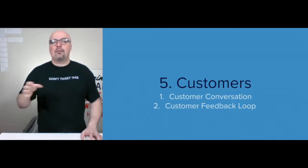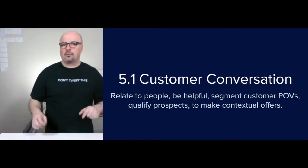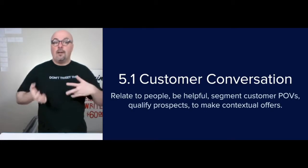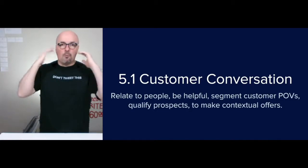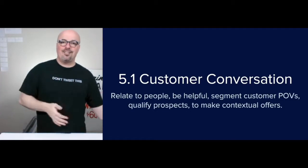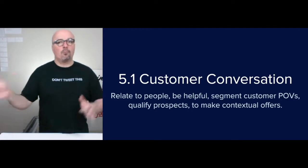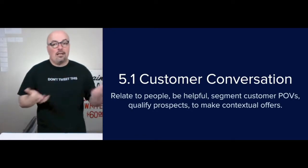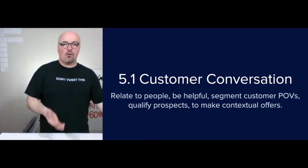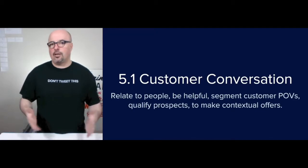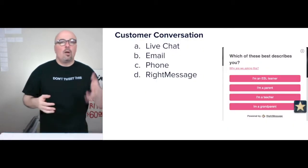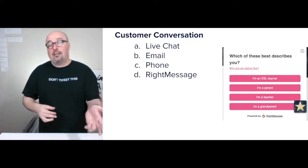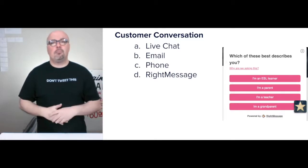For customers, we handle things with the customer conversation and the customer feedback loop. The goal of the customer conversation is to relate to people, and the way we're approaching that is to be helpful. Segment customers as they tell you about themselves — what they like, what they dislike, what's important to them — remember it as a brand. That's where segmenting customer points of view comes from. Then qualify the prospect and make contextual offers. The idea isn't to talk anyone into anything; it's to give people an opportunity to buy something they want to buy. We're using live chat and email through Drift, the phone where necessary, and Write Message to get to know people.